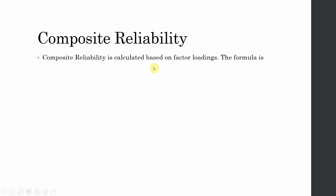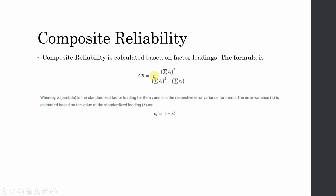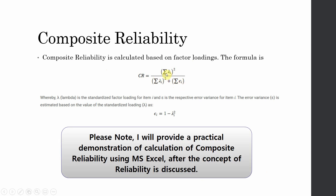Composite Reliability is calculated based on factor loadings. You sum your loadings, take the square, and sum the error variance. Lambda is the standardized factor loading for the item, and the respective error variance for each item is estimated by subtracting the standardized loading from 1.